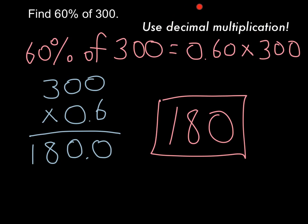One note. This method, use decimal multiplication, will always work. It may be complicated because the multiplication may be tougher than this. But if you can't do an equivalent ratio, try decimal multiplication.